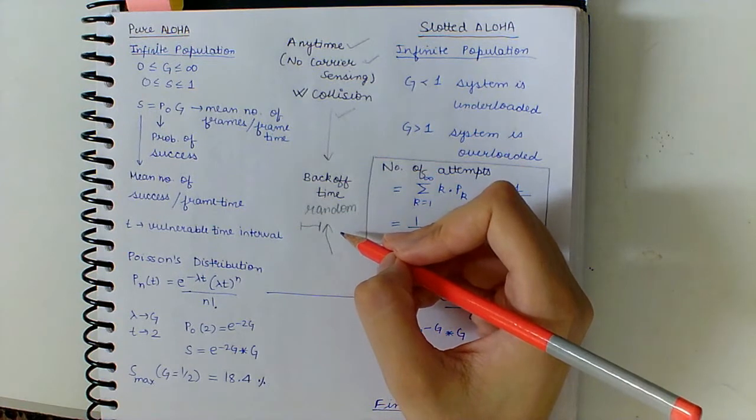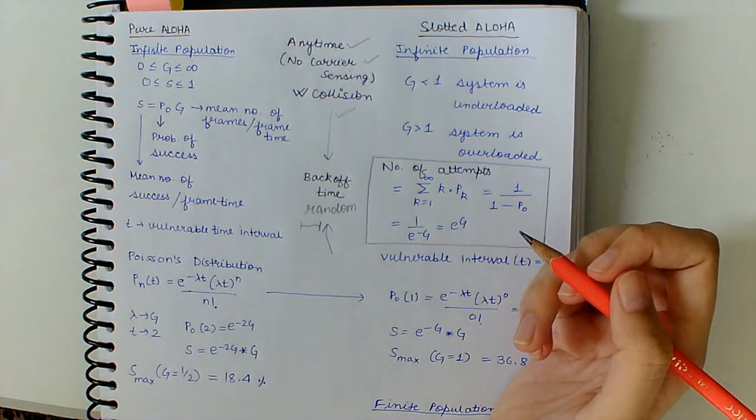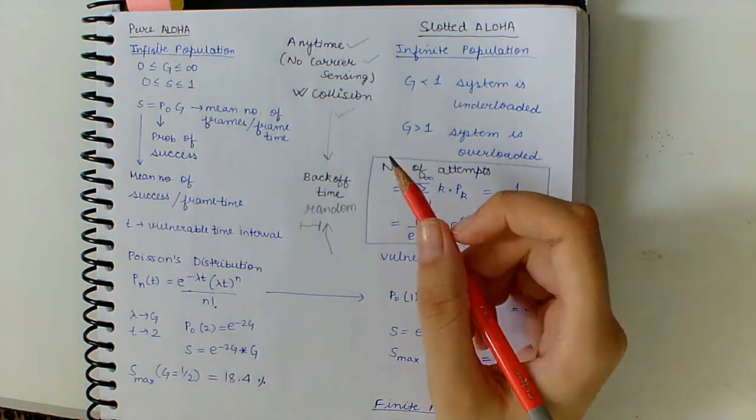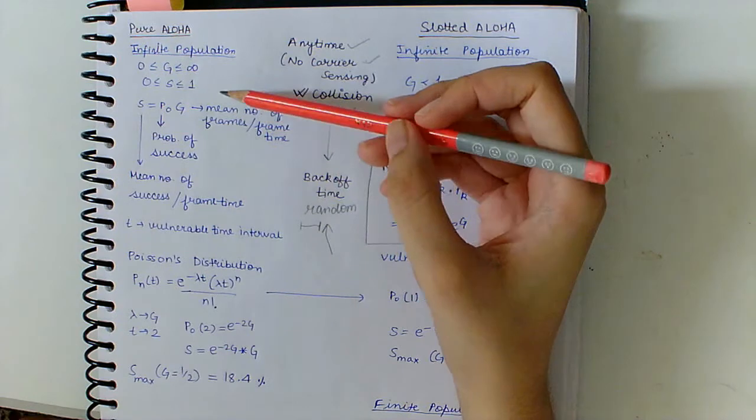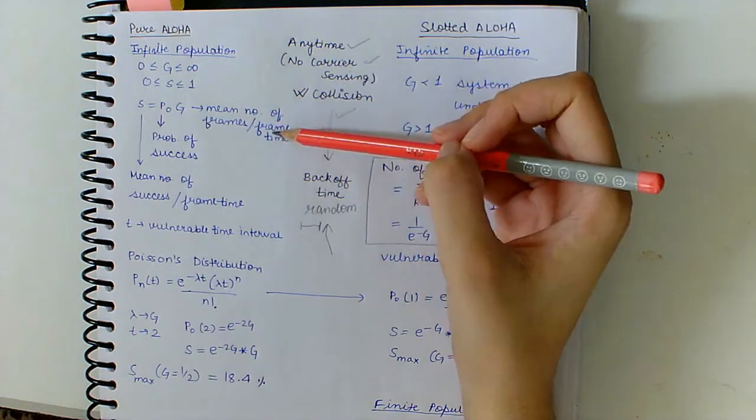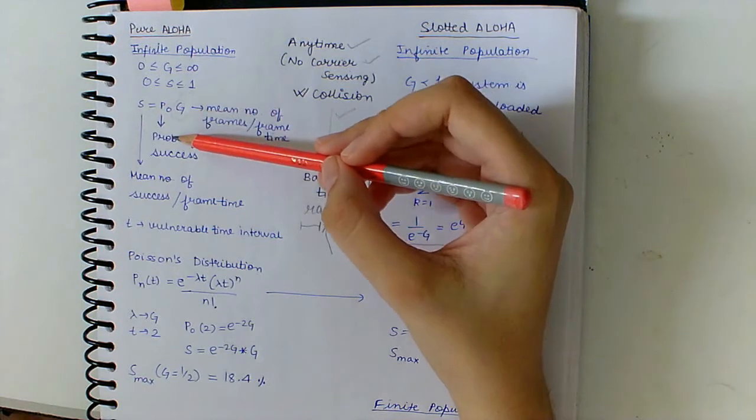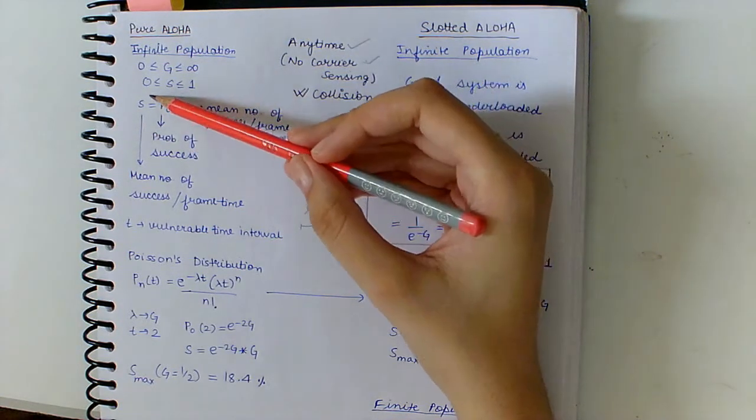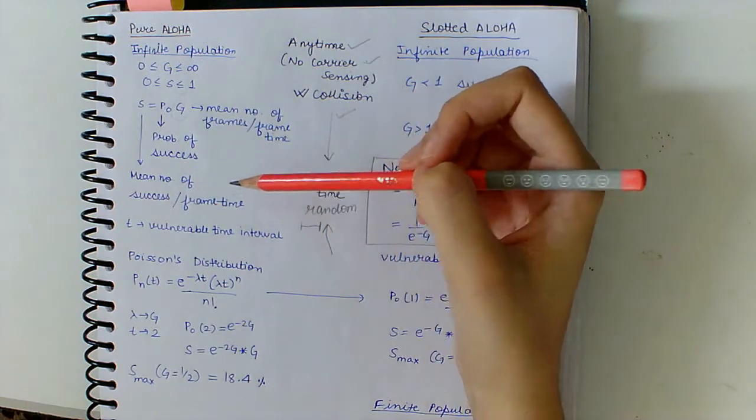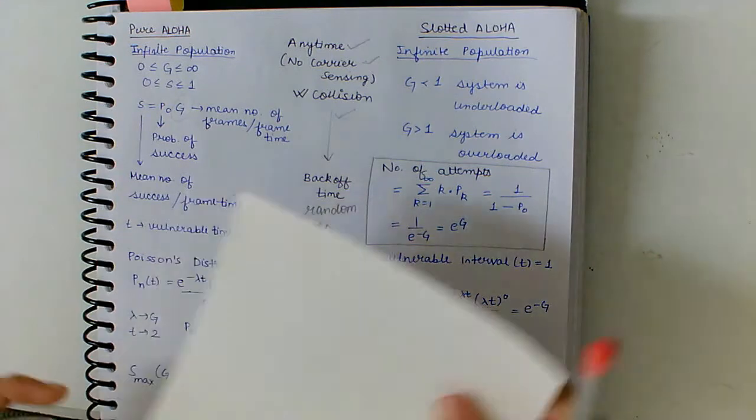Now, G is the mean number of frames transmitted per frame time, and P is the probability of success, and S is the mean number of successes per frame time. So what counts as a success?